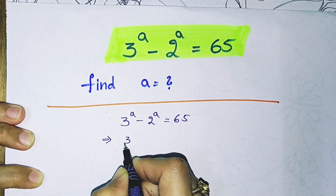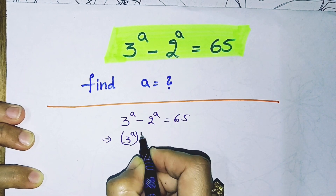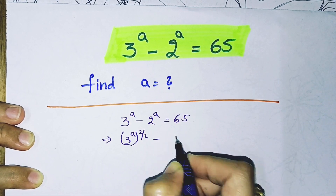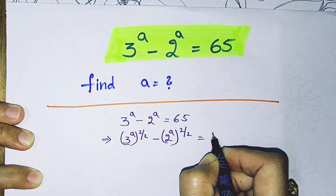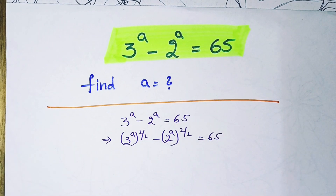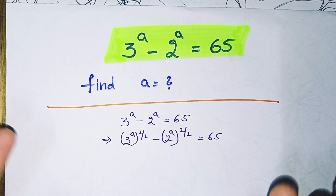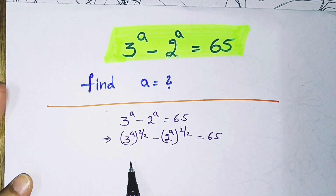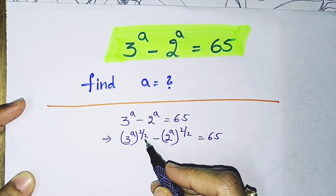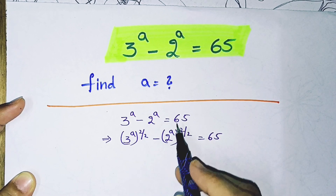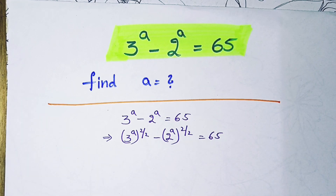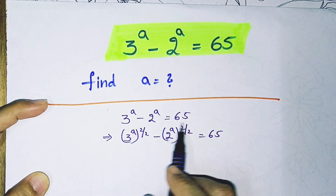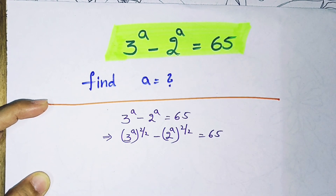First, I will rewrite the expression as: (3^a)^(2/2) minus (2^a)^(2/2) equals 65. Can I write it this way? Of course I can — if I cancel the 2/2, I get the same expression as the original question. I'm just converting this step to set up the next move.